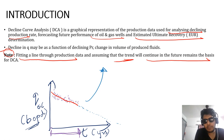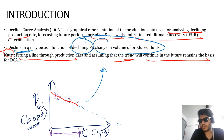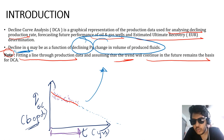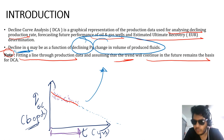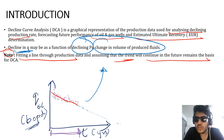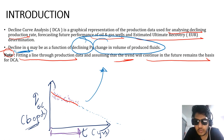This decline in production may be a function of declining reservoir pressure and change in volume of produced fluids. As you are producing the field, with time the reservoir pressure is going to decline. It definitely depends on the reservoir drive mechanism also, which we will discuss in detail in coming sessions. Reservoir pressure will decline with time — no doubt about that.